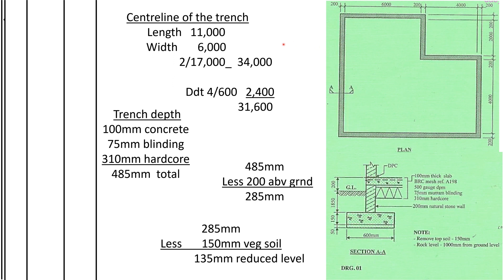So we shall take the length 11,000, the width 6,000 — the perimeter will be 34,000. Then we shall deduct the number of corners times the thickness of the trench: 4 times 600 is 2,400. So 34,000 minus 2,400 is 31,600. That is the center line of the trench.